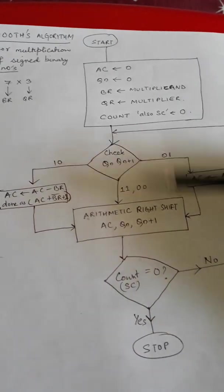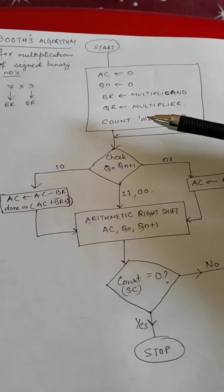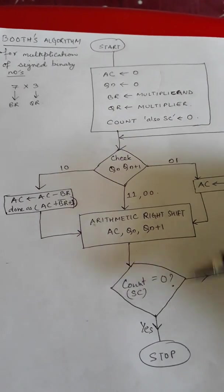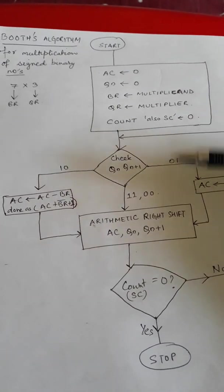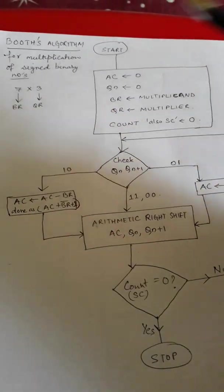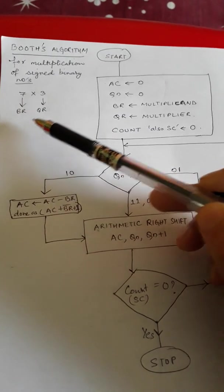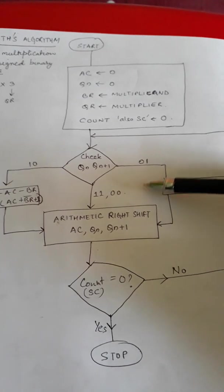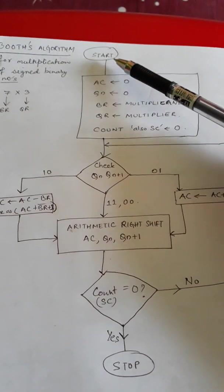Before we understand this process of multiplication, first of all understand this flowchart. This is also called the hardware implementation of the algorithm. First you have to understand this flowchart, and then with the help of these steps we can carry out the process of multiplying.